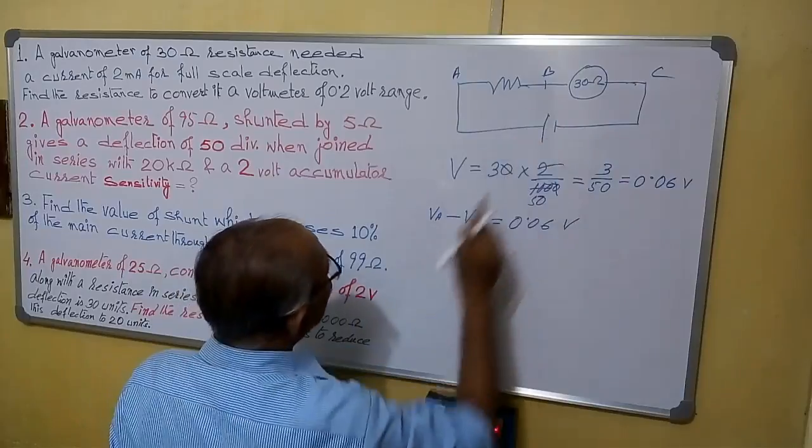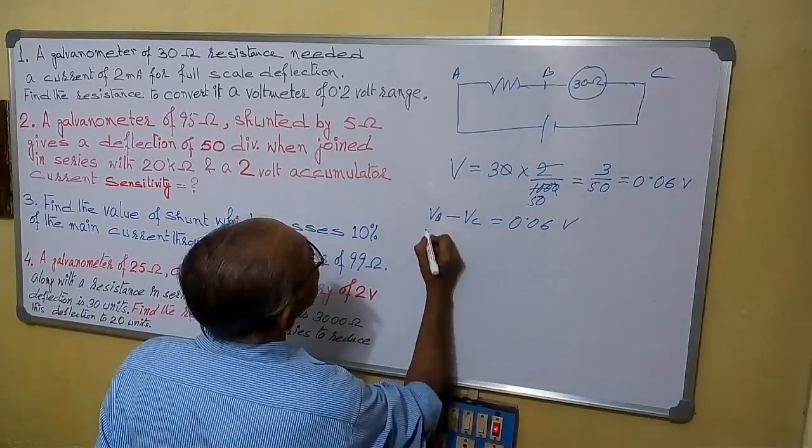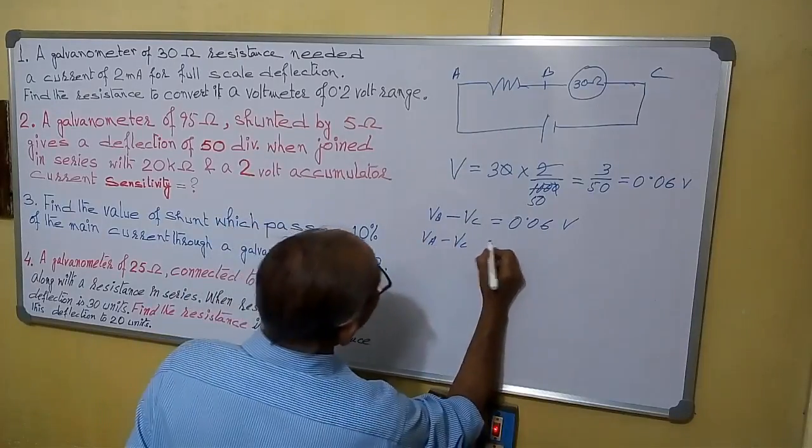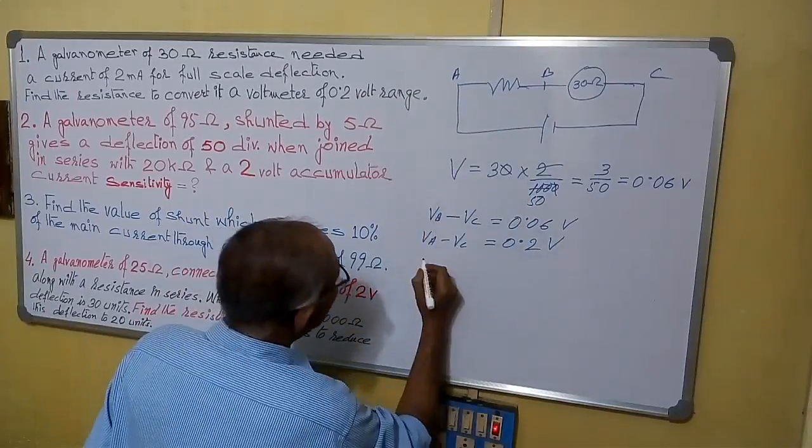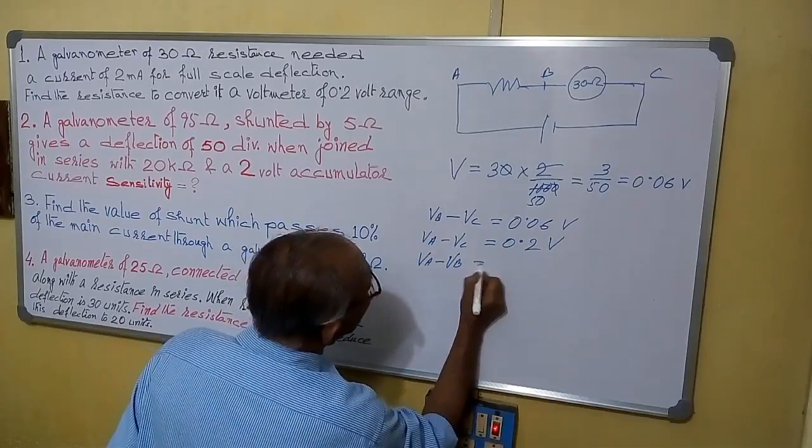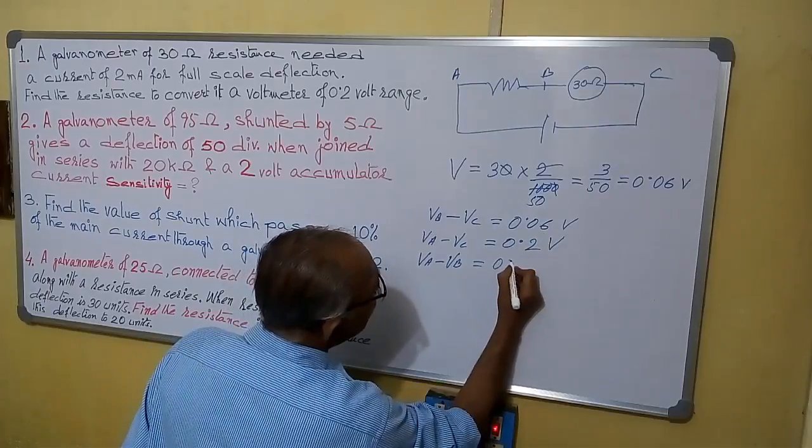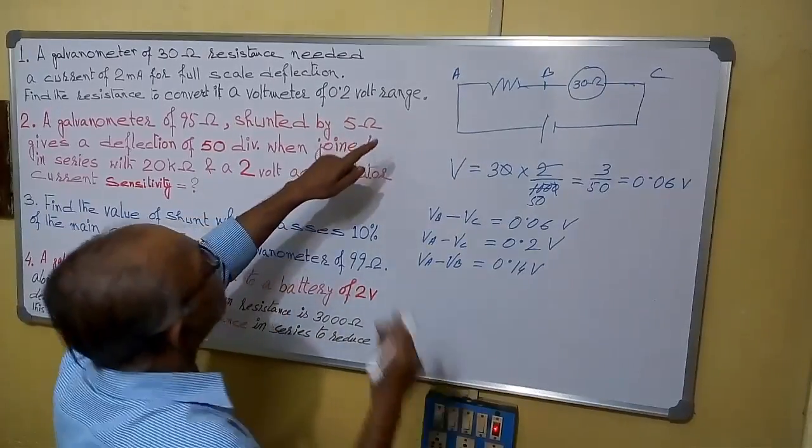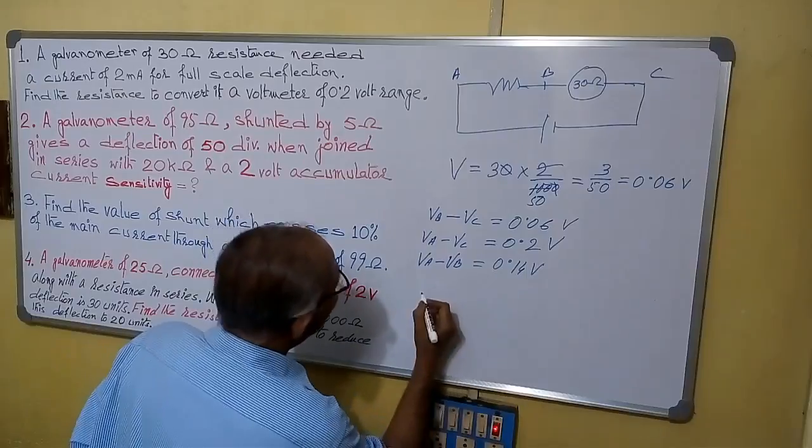This is VB minus VC. And VA minus VC equals to 0.2 volt. So now what we are doing: VA minus VD equals to 0.2 minus 0.06, equals to 0.14 volt. Now we need to find the resistance.